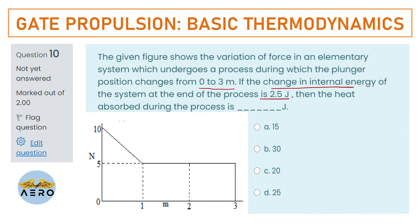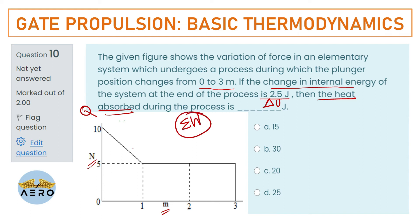They have given a graph of force versus displacement. When we know force versus displacement, the area under the curve represents the work done. From the first law of thermodynamics: Q = ΔU + W, which gives us how much heat is absorbed.